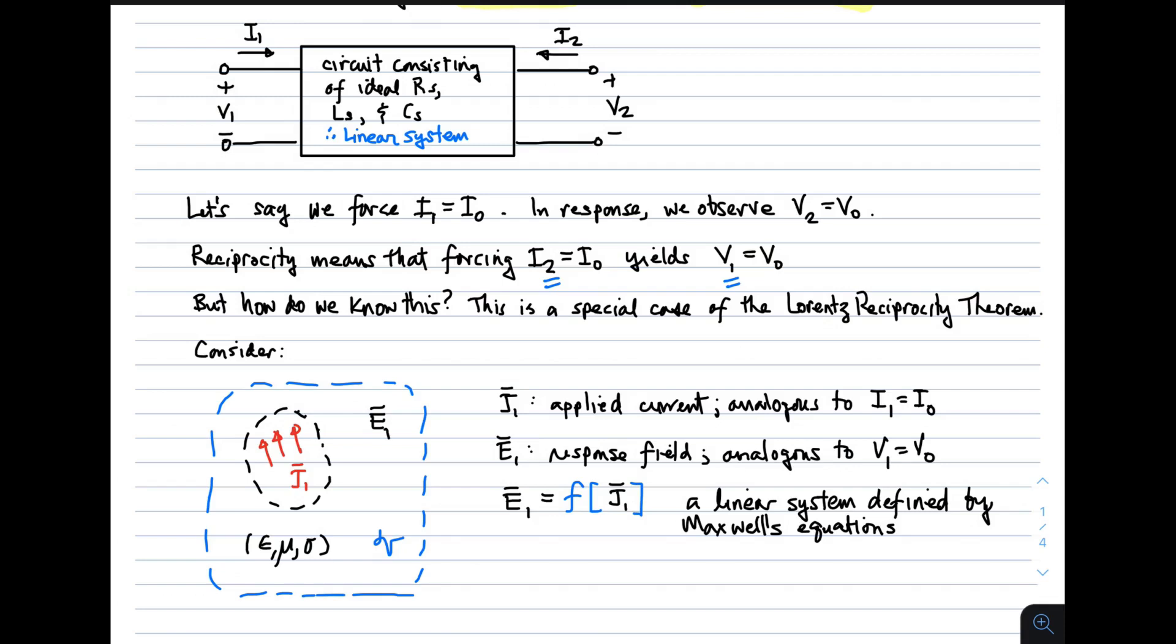So here's reciprocity in the way it commonly appears in circuit theory. The idea is you have a circuit, that is the circuit is the system, consisting of ideal resistors, inductors, and capacitors. And it's a two-port system, so you have at the input a voltage and a current, V1, I1. And you have at the other port, V2 and I2. And in this case,